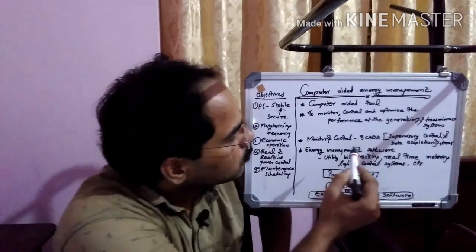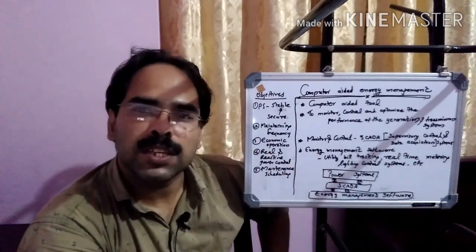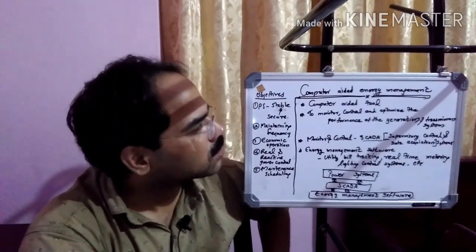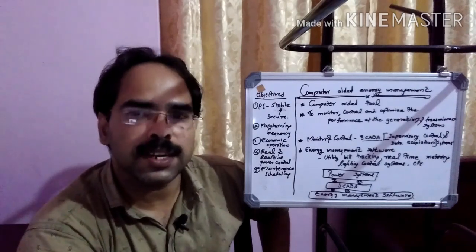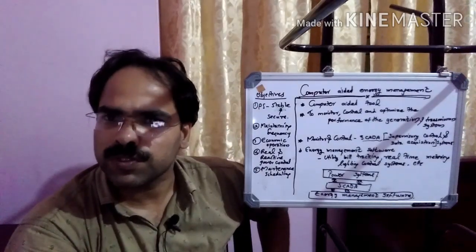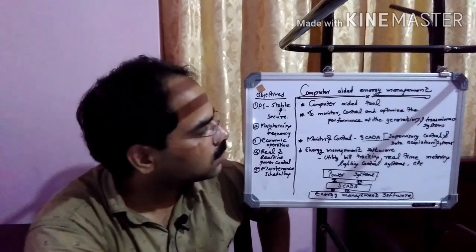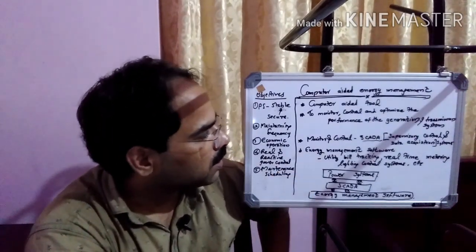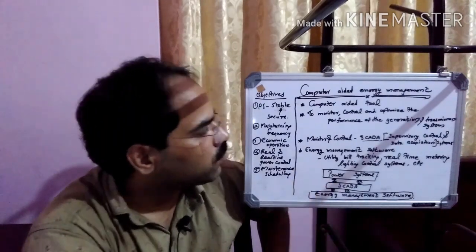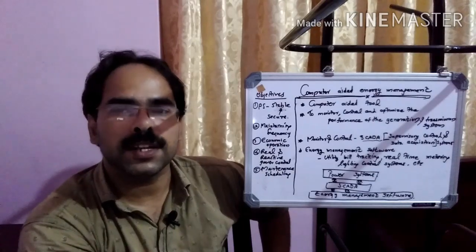SCADA — we all know — means supervisory control and data acquisition system. With the support of SCADA, we can monitor and control the energy systems. So it also includes under computer-aided energy management systems. Energy management software means there are a set of softwares. With the help of that set of softwares, we can manage energy systems — like utility bill tracking, real-time metering, lighting control systems, etc. These are the main portions of the computer-aided energy management systems.